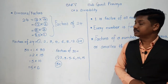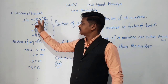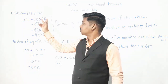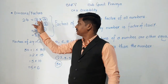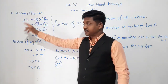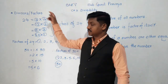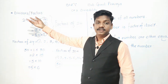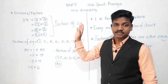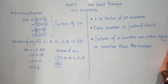So three properties of factors: one — 1 is a factor of all numbers; two — every number is a factor of itself; three — factors of a number are either equal to or smaller than the number. This is the concept of divisors or factors. Factors means: if we express a number as a product of two numbers, those two numbers are factors of that number. For example, 24 = 6 × 4, so 6 and 4 are factors of 24. Pause this video and write this in your notebook.